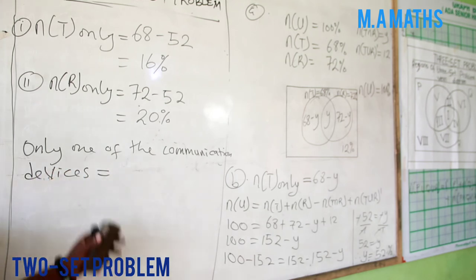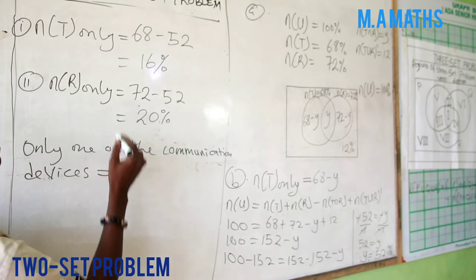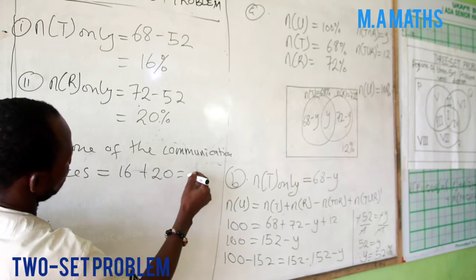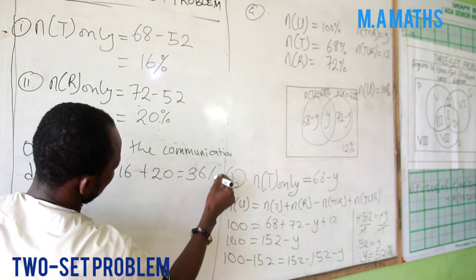For that matter, only one of the two communication devices will give us 16 plus 20, and this gives us 36 percent.